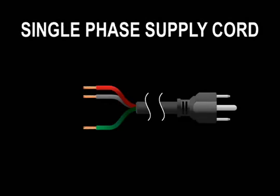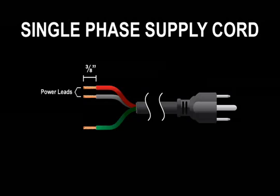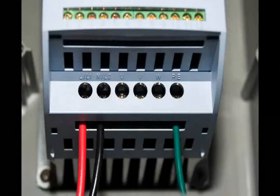Once you have the drive mounted, it's time to connect the single-phase supply. Strip off approximately three-eighths of an inch of insulation on each of the wires from your supply cord. There should be three wires here: two power wires and a green or bare copper wire for ground. Connect the two power leads to the terminals marked L/L1 and N/L2. The ground wire connects to the terminal marked with a PE.